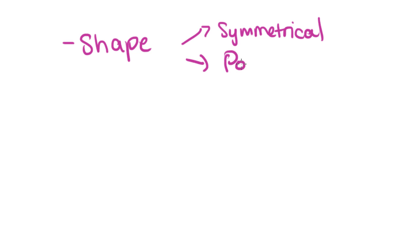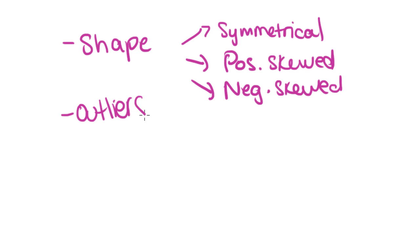So when you're describing distributions, the things that you look for, no matter whether it's a histogram, a stem and leaf plot, a box plot, a dot plot, whatever the distribution is, however it's represented, the things that you look for are the shape. And the shape can be either symmetrical, positively skewed or negatively skewed. You also look for the presence of outliers. And you might make a comment on whether they're a valid piece of data or if they're probably a data entry error or something like that. You talk about the spread, how far spread out it is. Is it all clustered up or does it span a big range? And you talk about the centre.